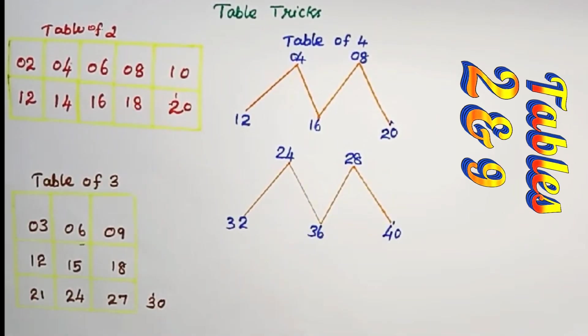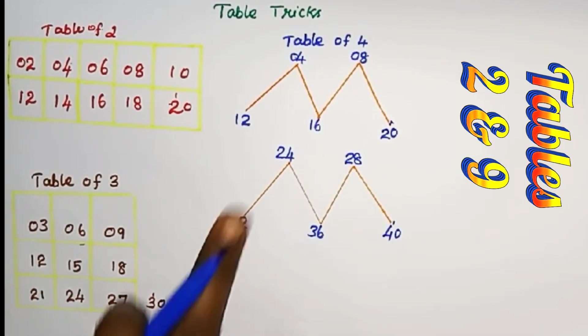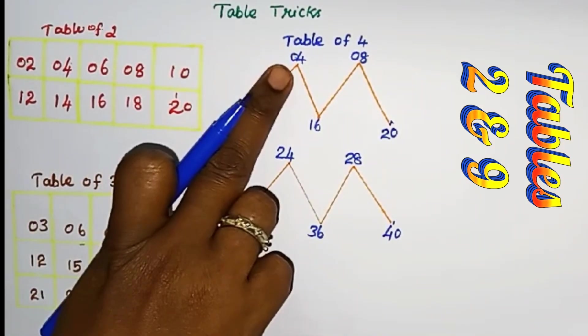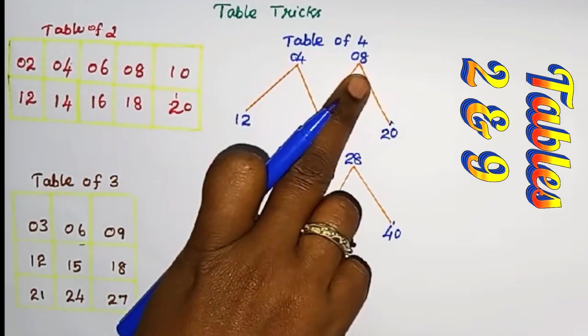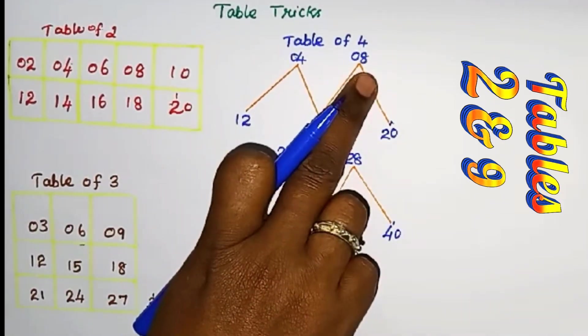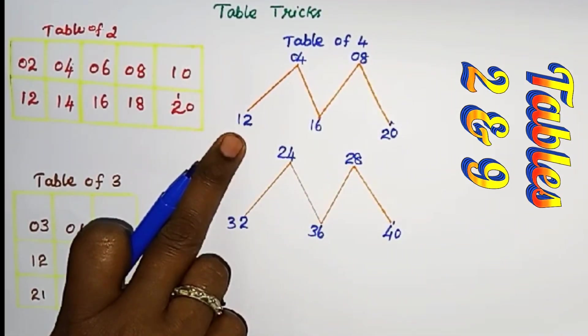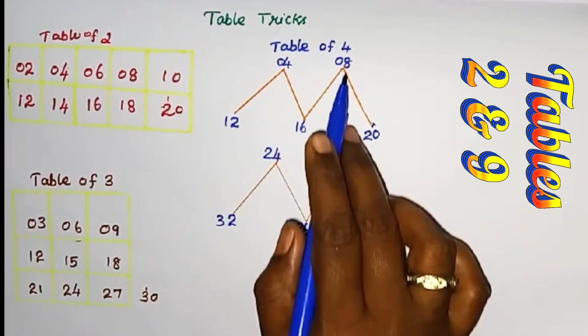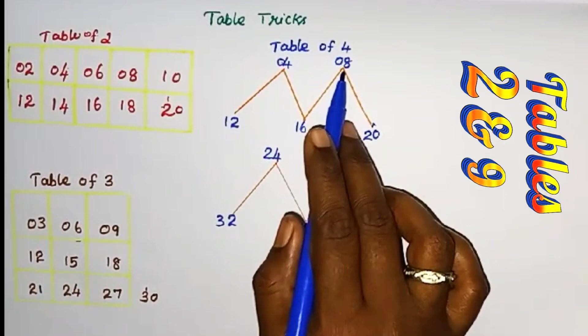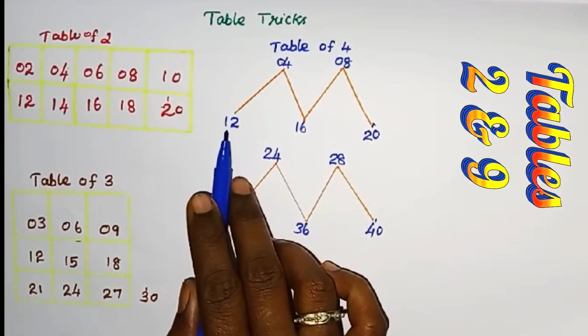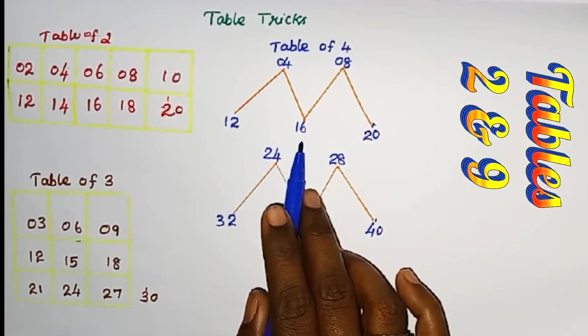Here 3, 3, 3. 3 plus 1 is 4. This is table of 4. 1 4 is 4. 2 4's are 8. 3 4's are 12.